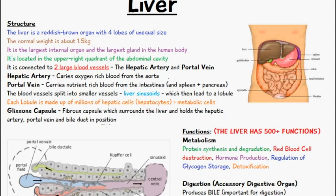The blood vessels split into smaller vessels called liver sinusoids, which then lead to a lobule. Each lobule is made up of millions of hepatic cells called hepatocytes, and these are metabolic cells.